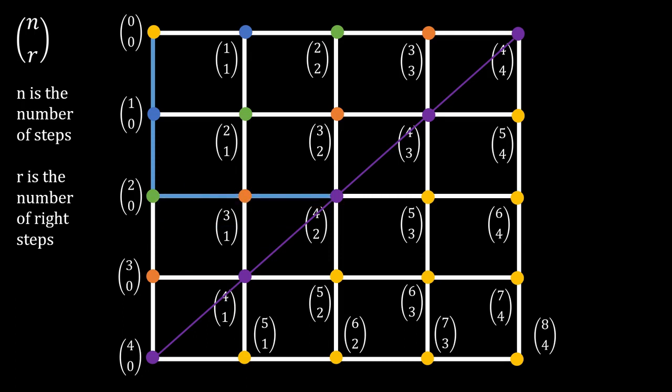For 4 choose 2, 1 down step becomes a right step. The same thing occurs for 4 choose 3, and 4 choose 4.